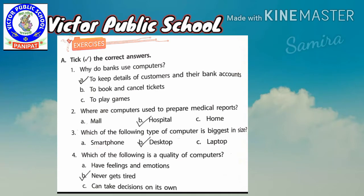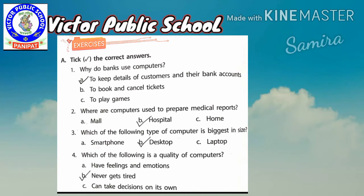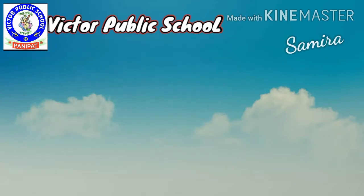Which of the following is a quality of computers? Option A: have feelings and emotions — meaning computer کو کوئی بھی بات feel ہو جاتی ہے اور emotions بھی ہوتے ہیں. Option B: never gets tired — computer کبھی بھی تھکتا نہیں ہے. Option C: can take decision on its own — اور اپنے decision خود لے لیتا ہے. So we will tick B, because computer never gets tired — computer کبھی نہیں تھکتا.